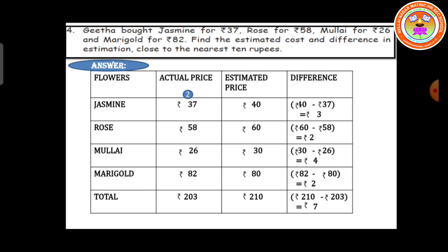Mullai: actual price is 26 rupees; estimated price is 30 rupees. The difference is 30 minus 26, giving 4 rupees. Marigold: actual price is 82 rupees; estimated price is 80 rupees because 2 is less than 5, so we keep the digit as it is. The difference is 2 rupees. The total actual price is 203 rupees, estimated price is 210 rupees, and the difference is 210 minus 203, giving 7 rupees. Students, just go through this problem — it is a very easy problem. We just find the difference between the estimated price and the actual price.